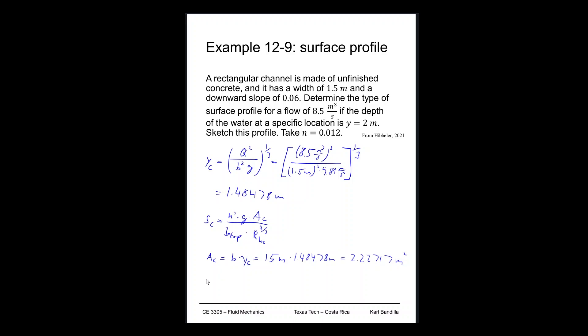Then our b_top is, of course, just equal to b. That is equal to 1.5 meters. It's a rectangular channel, so the flow width doesn't change.